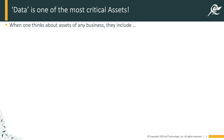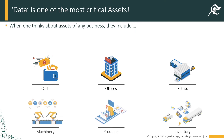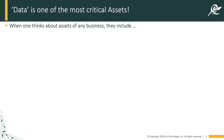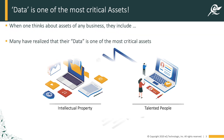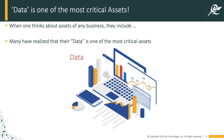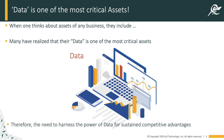Any company, when it looks at its own assets, is actually looking at cash, offices, plants, machinery, products, and inventory — these are traditional balance sheet kinds of assets. On top of that, you have intellectual property and talented people that are also critical assets. But there is a realization now that data is indeed one of the most critical assets, and therefore there is a need to harness the power of data for sustained competitive edge.